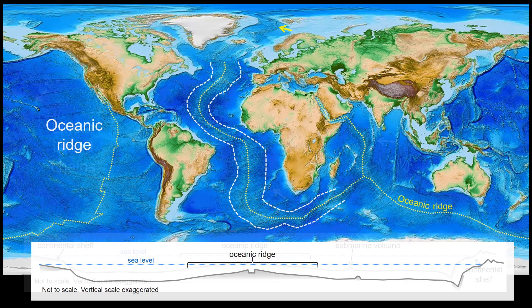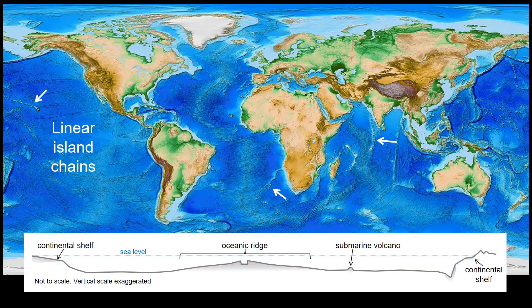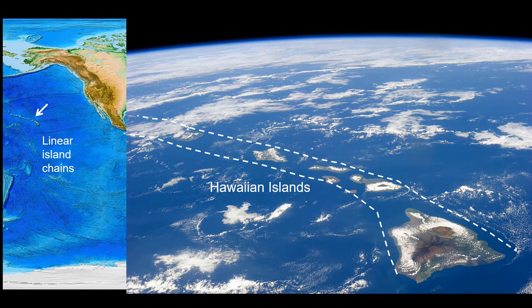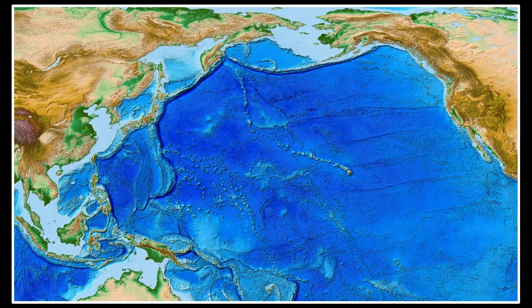Elsewhere, in the interiors of the ocean basins, we can sometimes find narrow, linear chains of islands. These represent submarine volcanoes that have grown tall enough to rise above the sea surface. The most famous of these are the Hawaiian Islands. When we look more closely, we can recognize that this island chain has relatively few islands and is mainly composed of sea mounts, or submarine volcanoes.